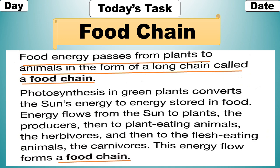Energy flows from the sun to plants — the producers — then to plant-eating animals — the herbivores — and then to the flesh-eating animals — the carnivores. This energy flow forms a food chain. Energy flows from the sun to producers, then to herbivores, and after that to carnivores; this energy flow is called a food chain.